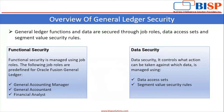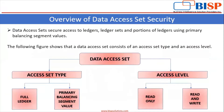The second is Data Security. In Data Security, it controls what action can be taken against which data. It is managed using Data Access Set and Segment Value Security Rules. Data Access Sets secure access to ledgers, ledger sets, and portions of ledgers using primary balancing segment values.